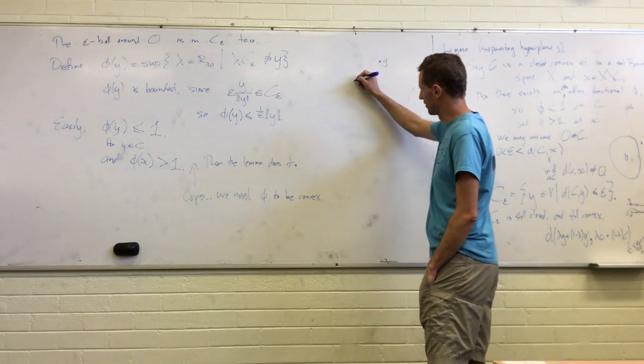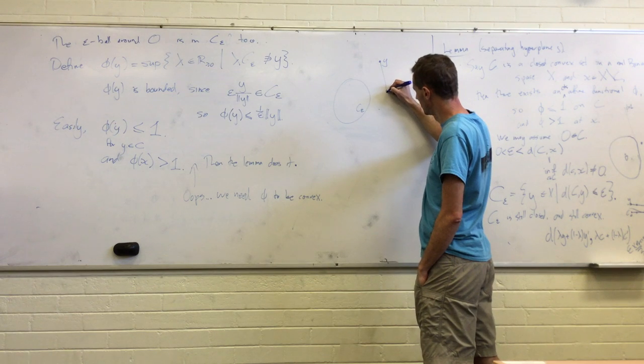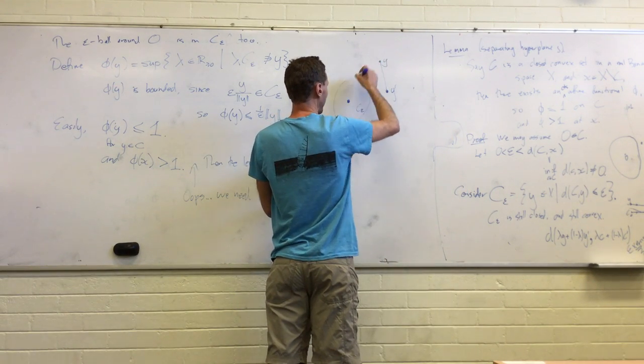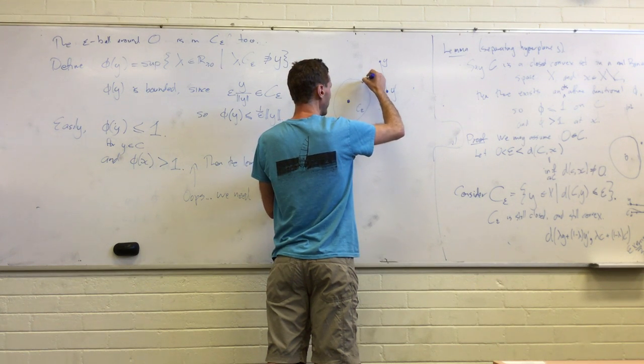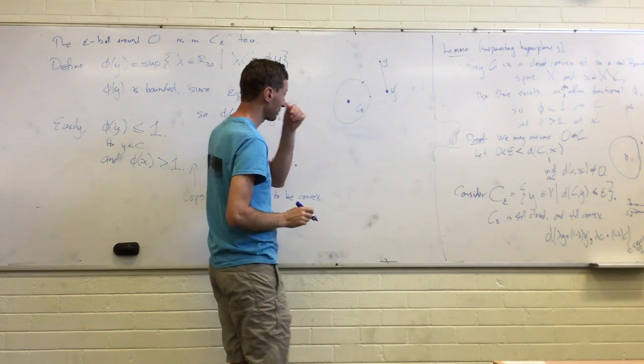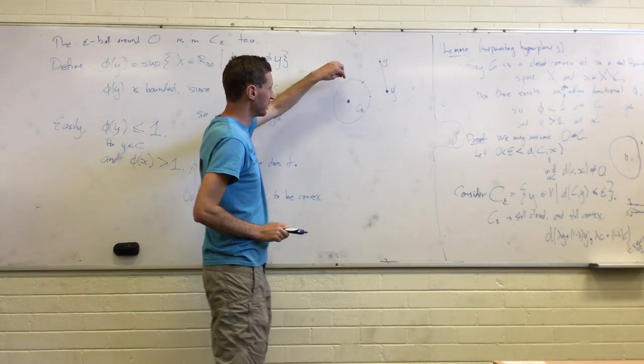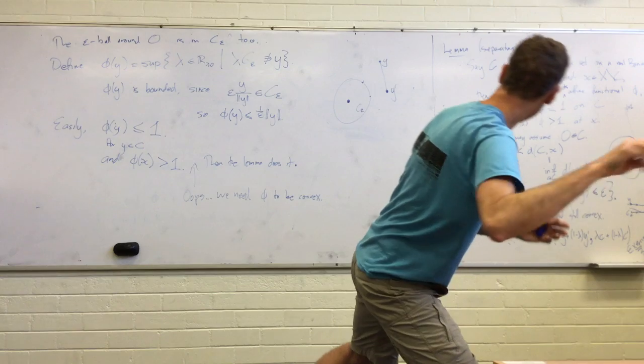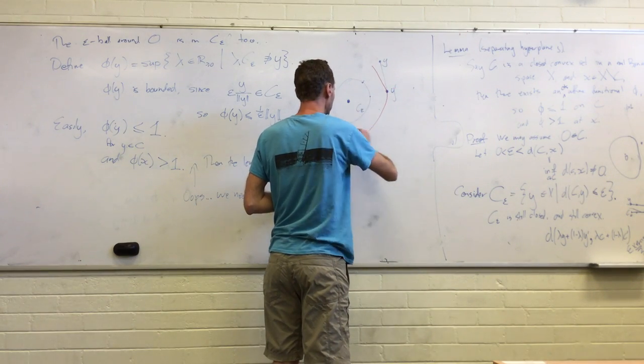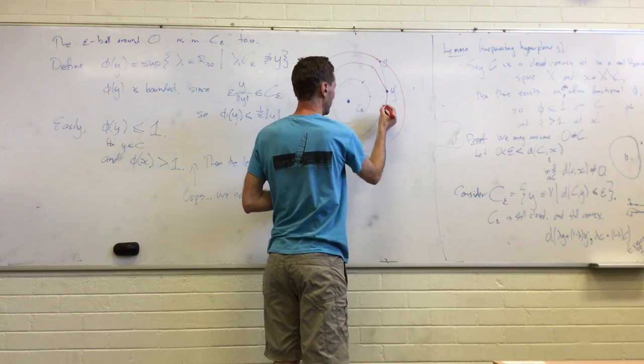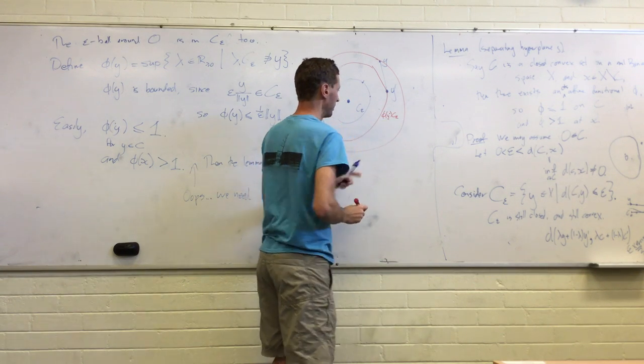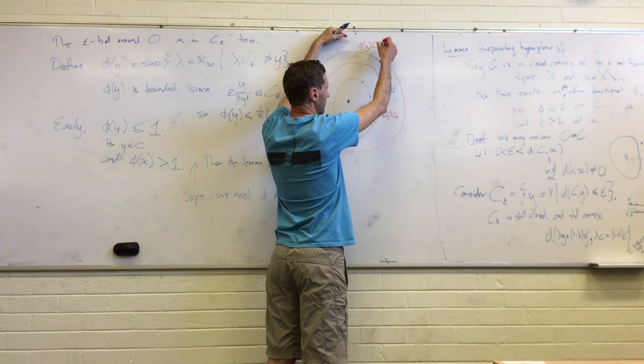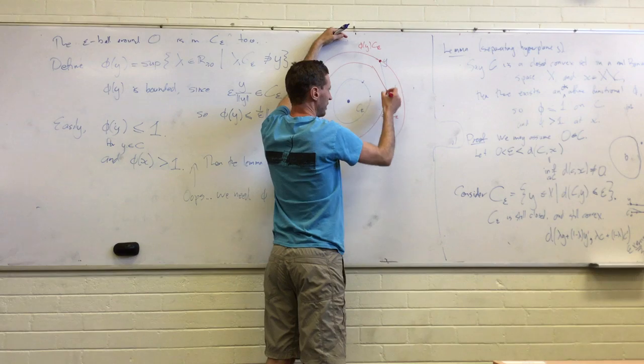So here's C-epsilon. And here's y and y-prime. And here's maybe zero here. So we work out that we need to scale up C-epsilon by—let's see, where do we draw it—so here was phi(y-prime) scaled up enough so that it just hits y-prime. And here was phi(y) scaled up just enough so that it hits y.